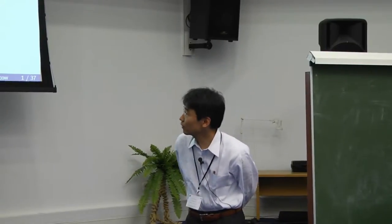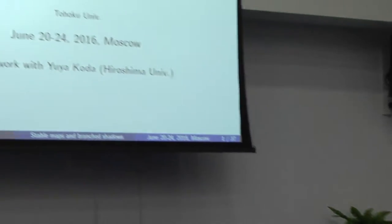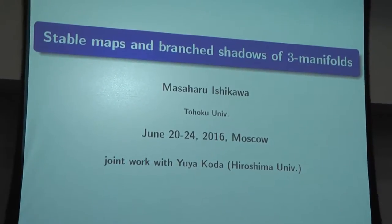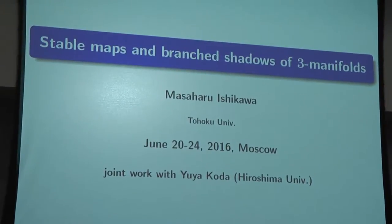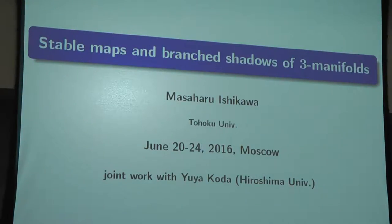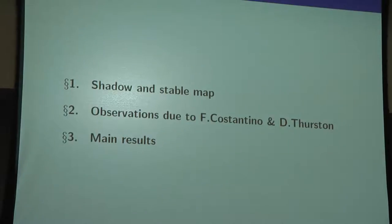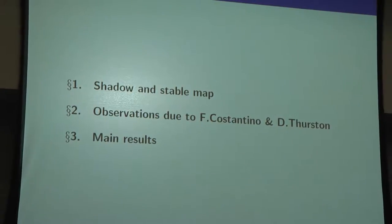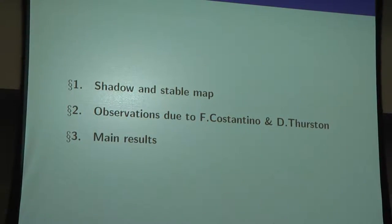I usually study low-dimensional topology from the viewpoint of singularity theory and vice versa. Stable maps are something in singularity theory, and shadows are in low-dimensional topology. This is joint work with Yuya Coder at Hiroshima University. First, I will explain what a shadow is and what a stable map is — just stating the definitions. Then I introduce some observations due to Costantino and Thurston, and finally I state the main results.